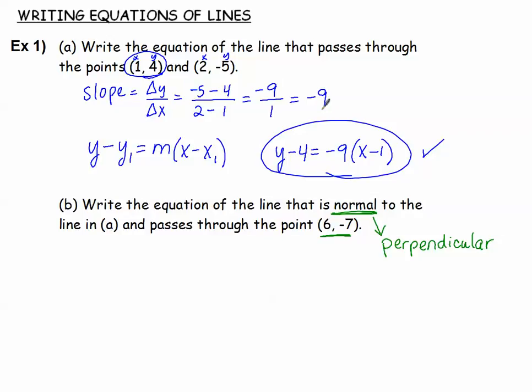Remember in part a we got a slope of negative 9. Well, remember that slopes of lines that are perpendicular are opposite reciprocals. So if negative 9 was the slope of the previous line, the opposite reciprocal will be 1/9. So our slope is 1/9.